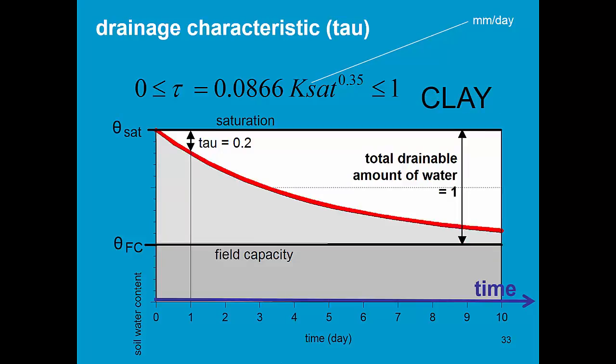In a clay soil with a low Ksat and a low tau, the drainage will continue during a long time, since only 20% of the total drainable amount of water is drained on the first day.